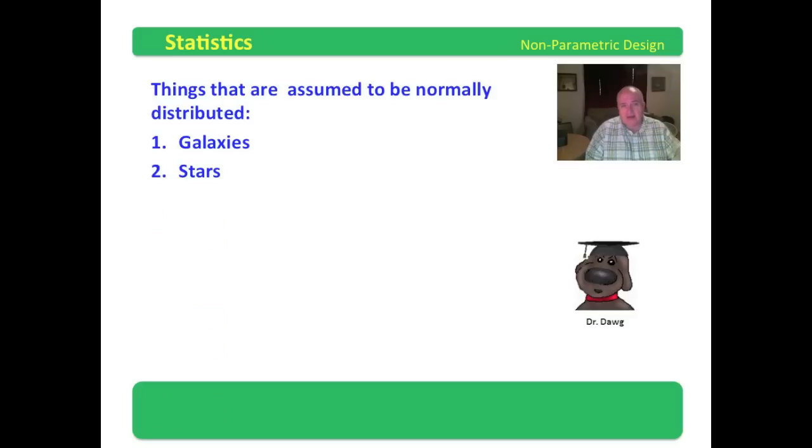Stars in the galaxies and the weight of stars might be normally distributed. The color of stars might be normally distributed. People can be normally distributed.